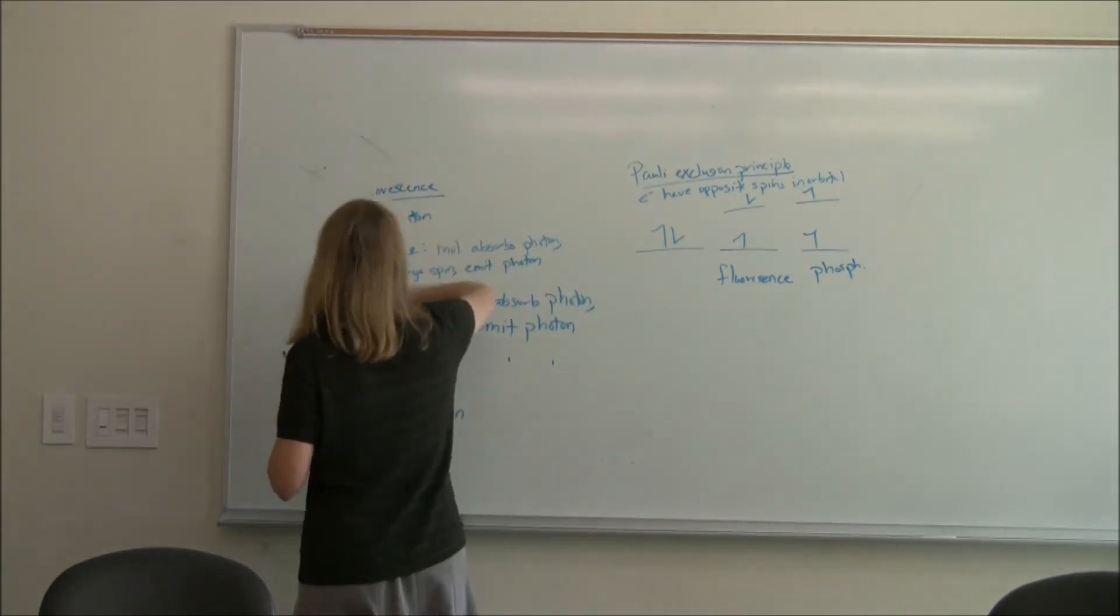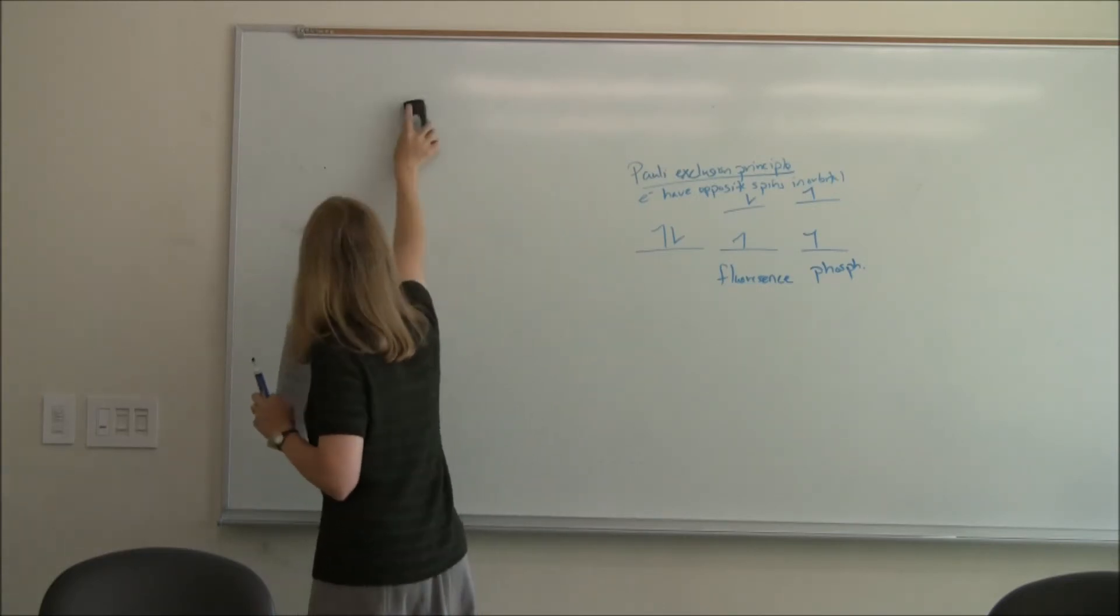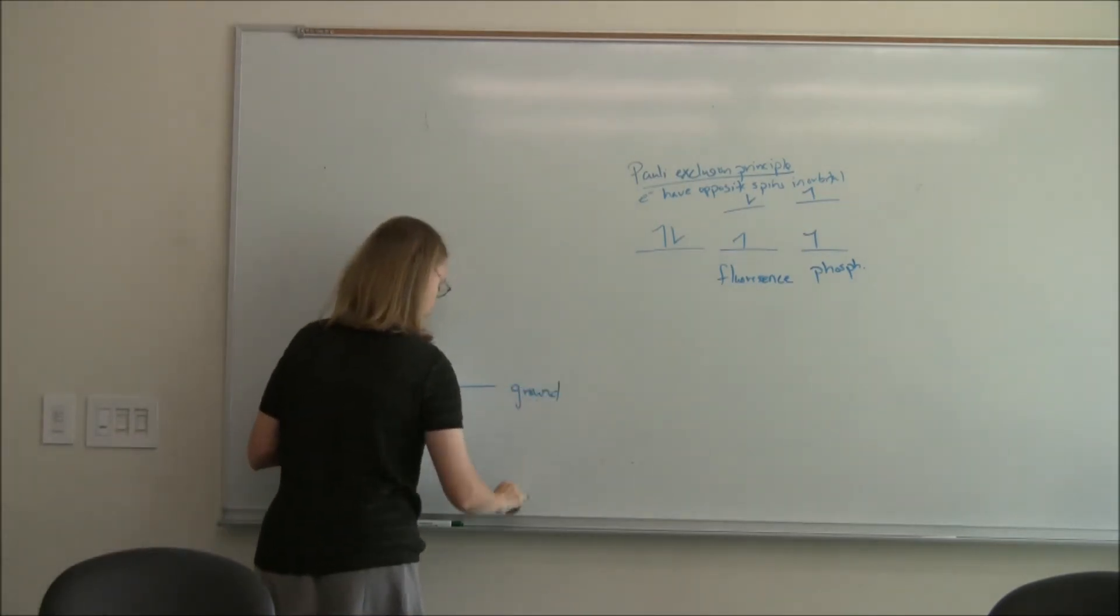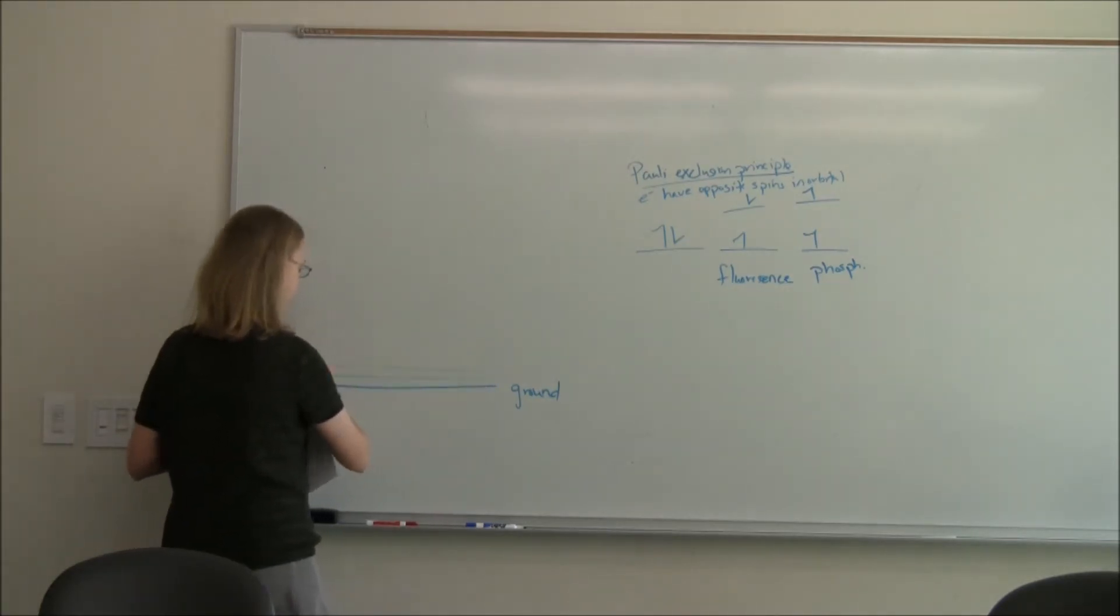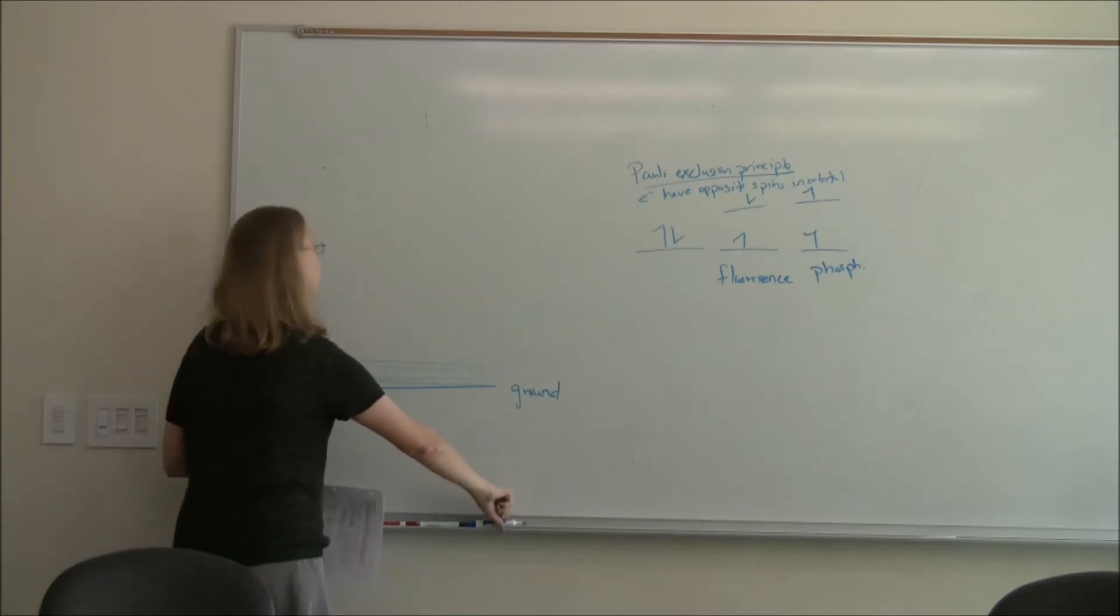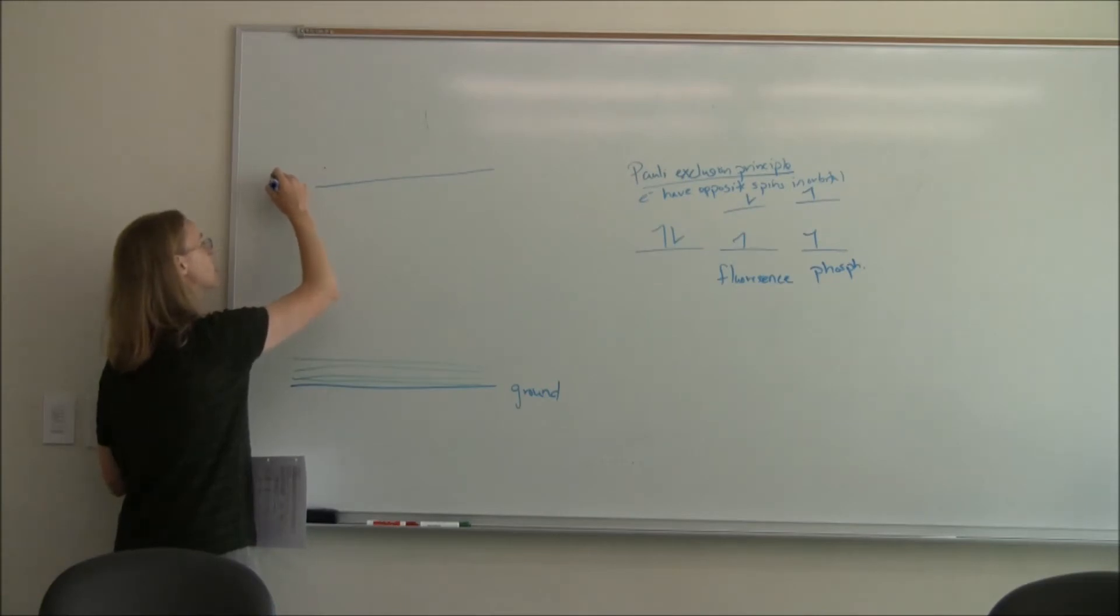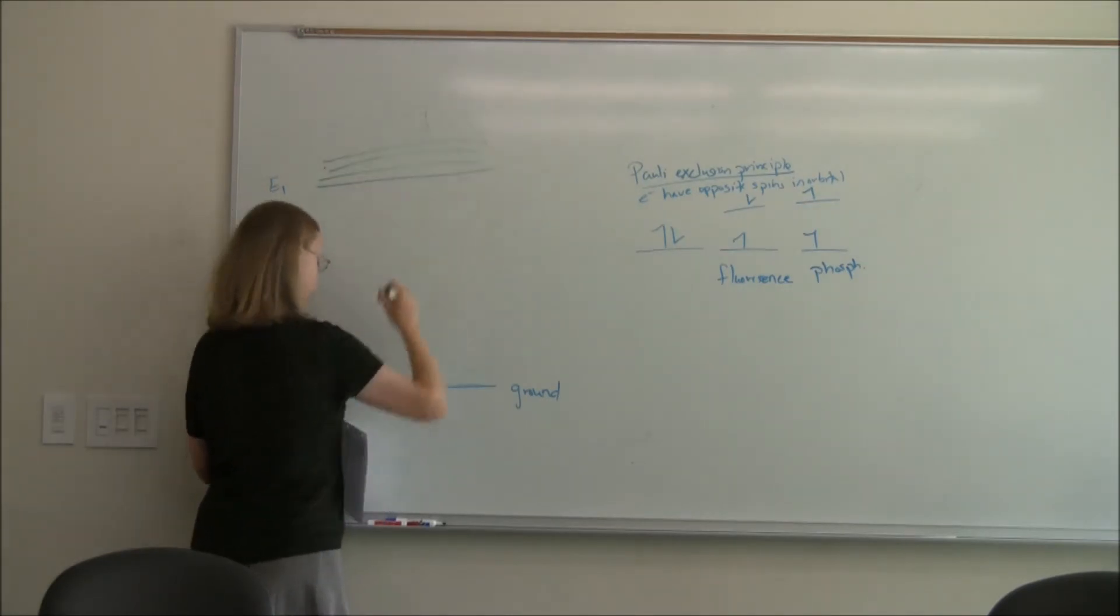Let's draw the energy level diagram for fluorescence. We're going to start at the ground state. That ground state is going to have vibrational and rotational states, lots of them. From the ground state, for our UV-vis, we get it to an excited electronic state. We'll call this E1. That's our excited electronic state. And that too will have vibrational and rotational states.